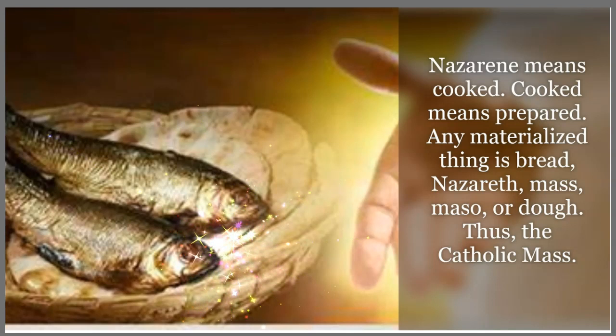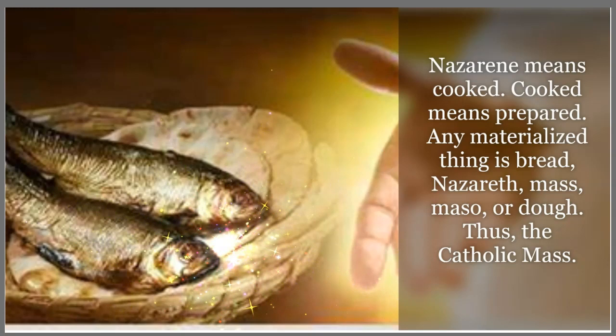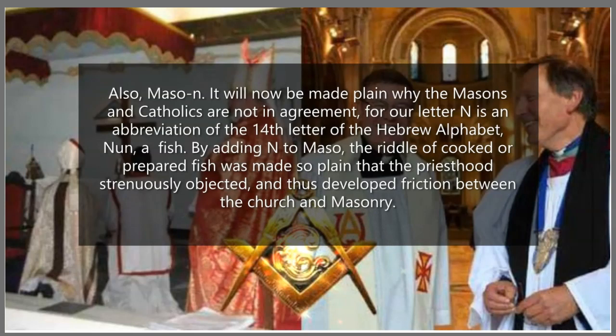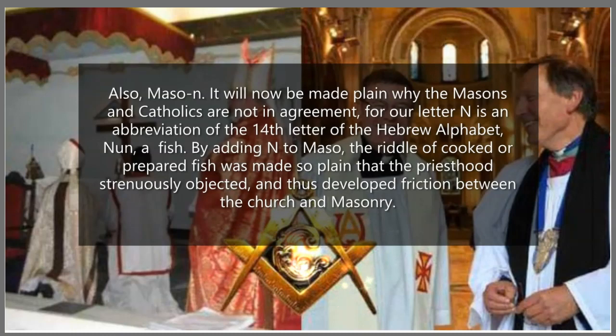Nazarene means cooked. Cooked means to be prepared. Any materialized thing is bread — Nazareth, Mass, Maso, or Doe. Thus, Catholic Mass. Also Mason. It will now be made plain why the Masons and the Catholics are not in agreement, for our letter N is the abbreviation of the 14th letter of the Hebrew alphabet, Nun — a fish. By adding the N to Maso, the riddle of the cooked or prepared fish was made so plain that the priesthood strenuously objected and thus developed friction between the Church and Masonry.